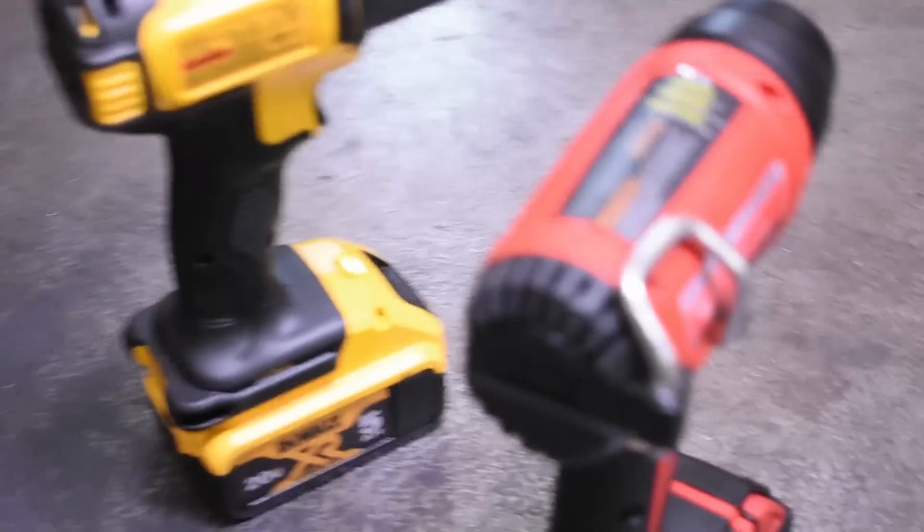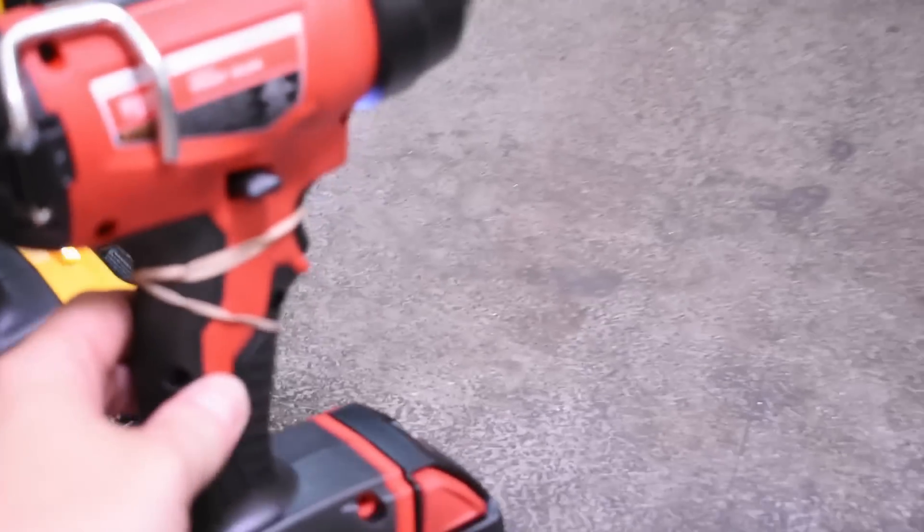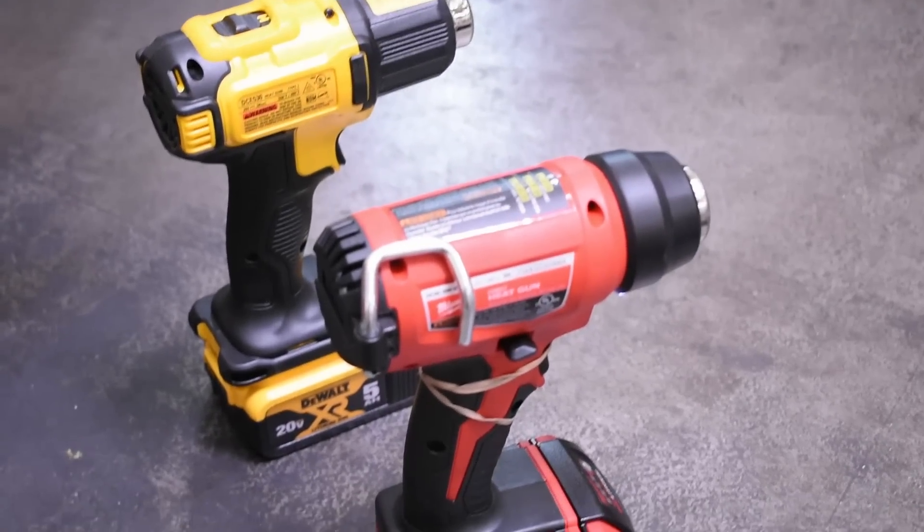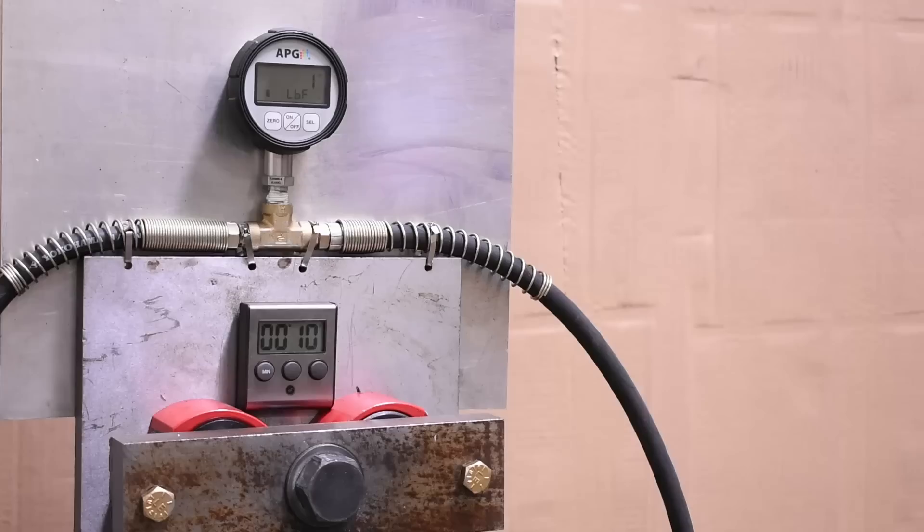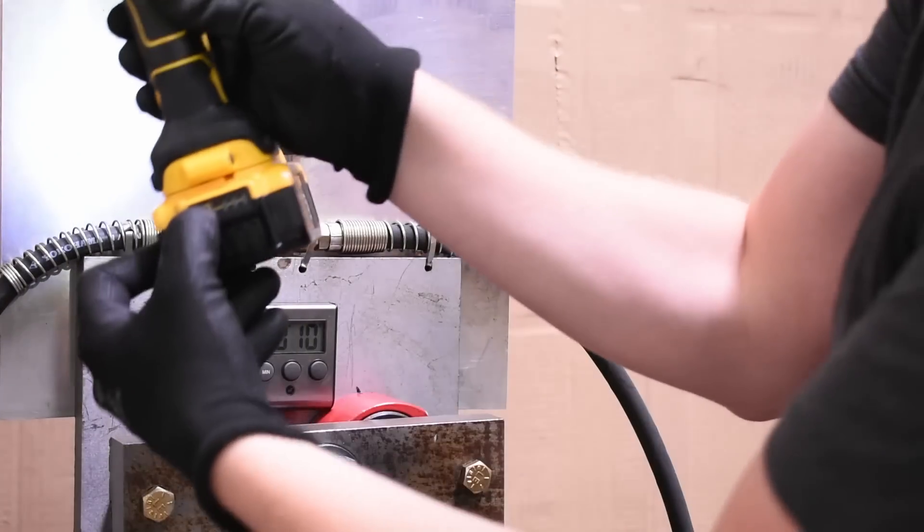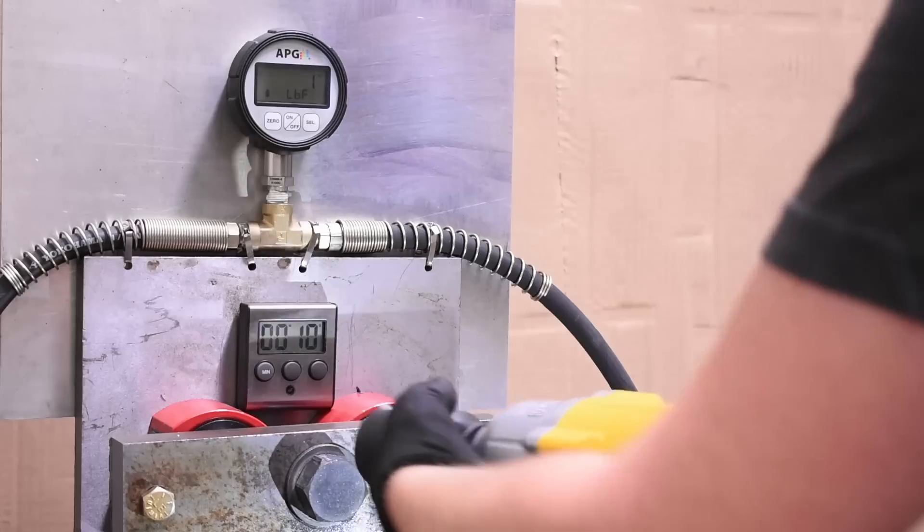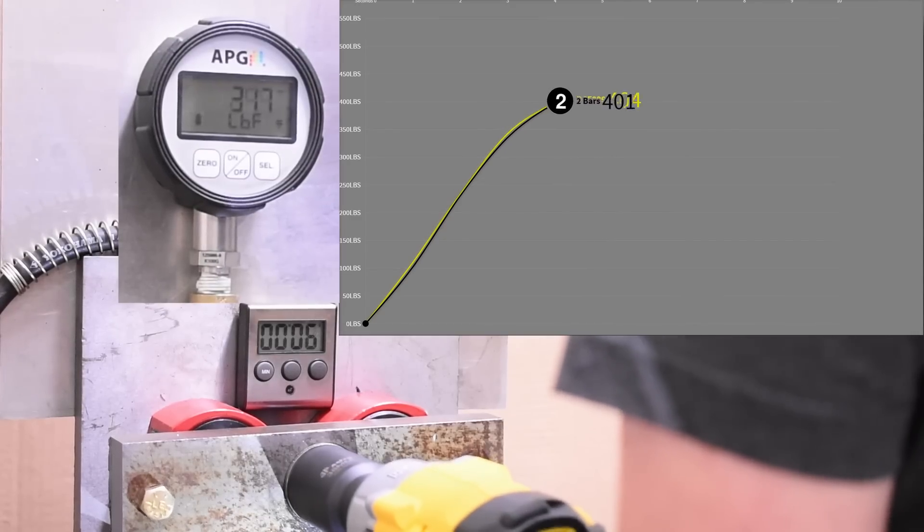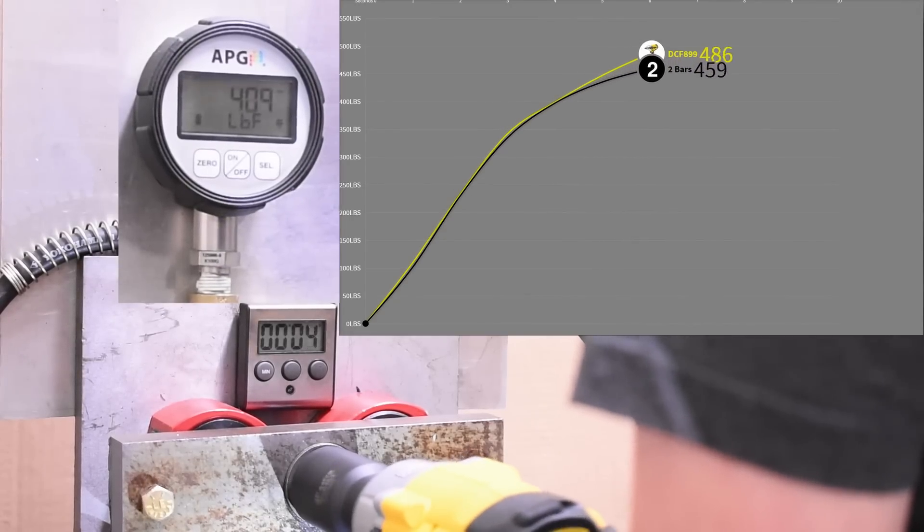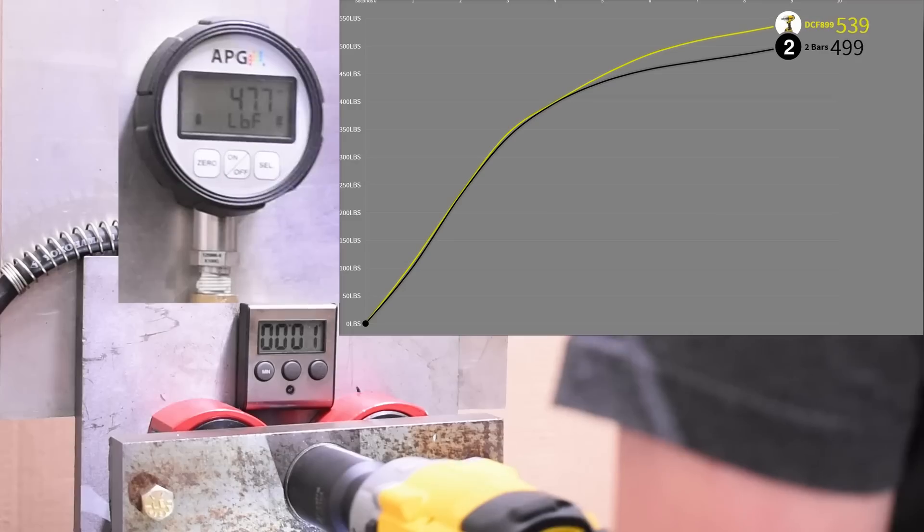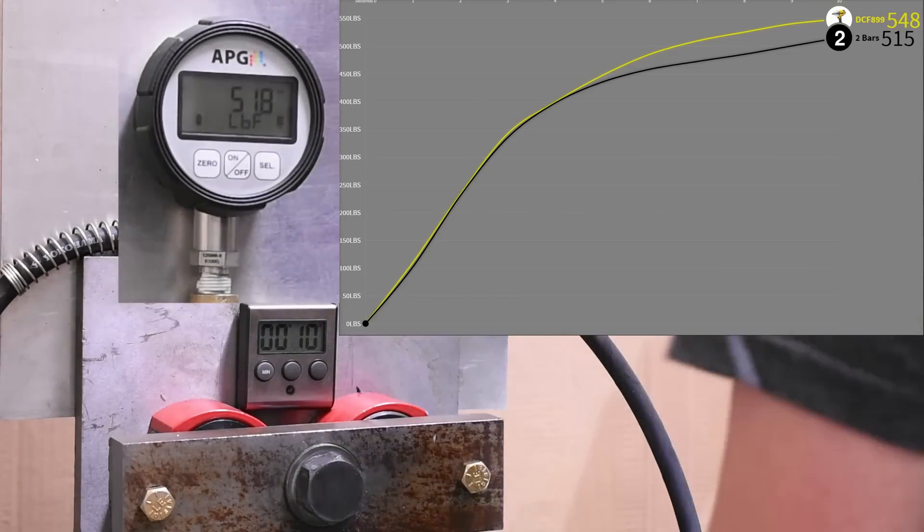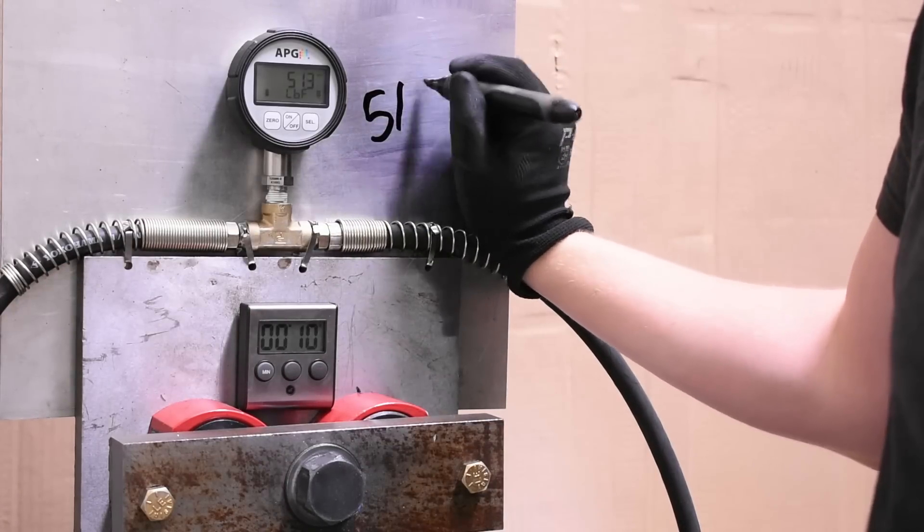Now we let the heat gun do its work and bring that three bars down to two and give it a couple minutes to cool. The Milwaukee needs a rubber band to sort of keep its trigger on in this case. Here's that two out of three battery. 515, already 6% down from its first full run.